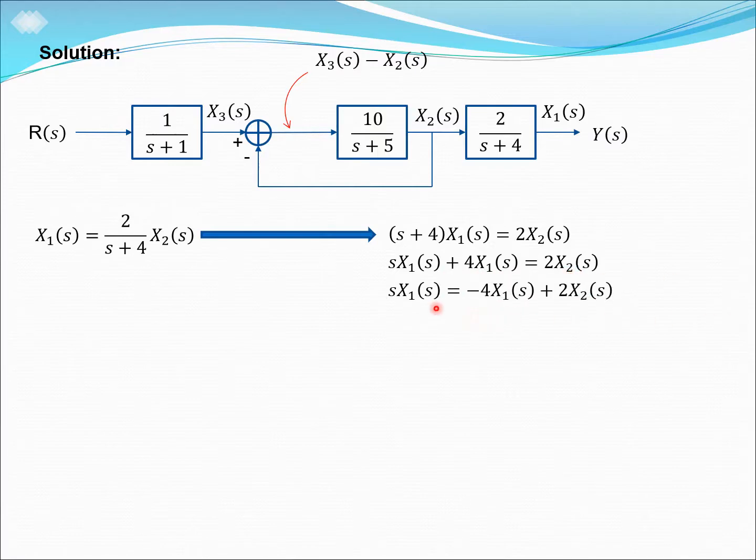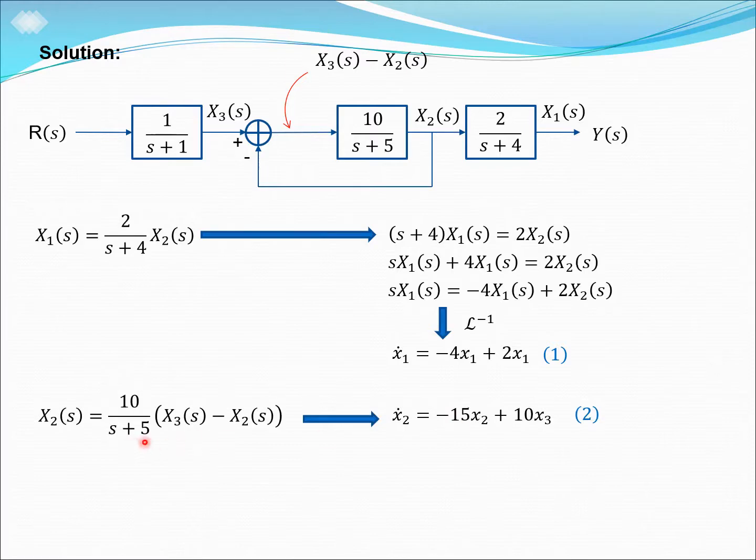So, let's rearrange so that the equation should look like this, and then we are going to do the inverse Laplace transform so that we will produce the first state space equation as x1 prime equals to minus 4x1 plus 2x2. So the process repeats again until we get all the three equations.